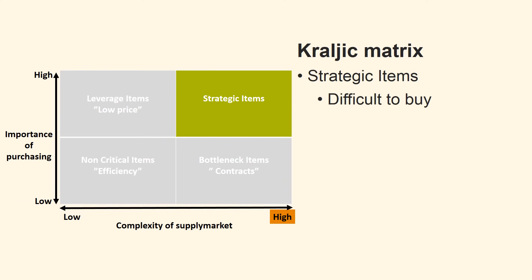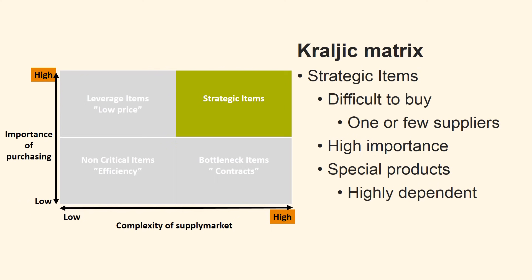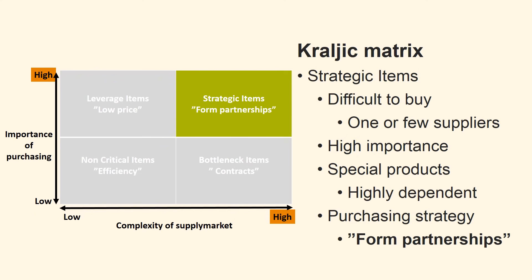Strategic items are products which can be acquired only from one supplier or very few suppliers. The product also has a high importance in the buyer's economy. It often involves specialized products where it is difficult to change supplier and the products are crucial for the process or the product of the buyer. The company is highly dependent on the supplier. The recommended purchasing strategy is to form a partnership between the company and the supplier. The close partnership can be achieved by co-creation of the product with the supplier, preferably with as much openness as possible, so our supplier does not exploit our vulnerabilities.